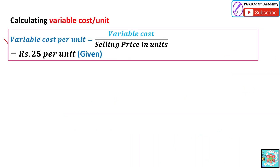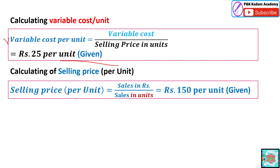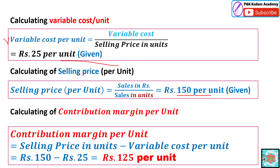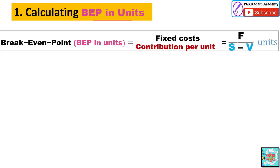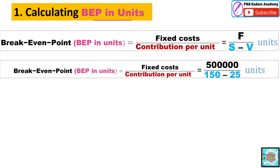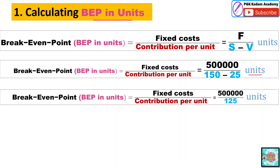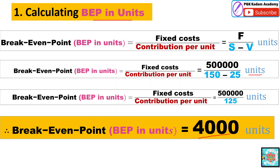Here V is the variable cost per unit, which is given. S is also given as 150 rupees per unit. So we calculate the contribution margin per unit: 150 rupees minus 25 rupees equals 125 rupees. Then the BEP in units is fixed cost upon S minus V, that is 5 lakh upon (150 minus 25), which gives the BEP value of 4,000 units.